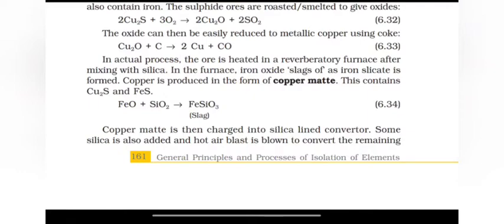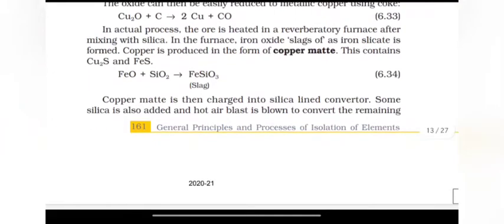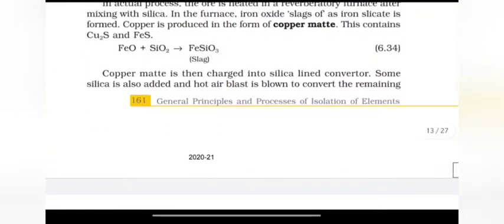In the furnace, iron oxide slags off as iron silicate is formed. Copper is produced in the form of copper matte. This contains Cu2S and FeS. FeO plus SiO2 gives FeSiO3.